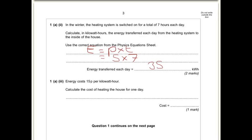And energy costs 15p per kilowatt hour. Calculate the cost. Well if each kilowatt hour is 15p, so it's just simply 15 times 35, and that's going to equal 525p. So don't forget to include a unit there. You could say 5.25 pounds.